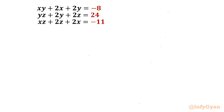Welcome to InfiGyaan friends. In this video we are going to take up one very interesting challenging question from system of equations. Here we are having three equations: xy plus 2x plus 2y equal to negative 8; yz plus 2y plus 2z equal to 24; xz plus 2z plus 2x equal to negative 11. We have to find out xyz. So let's get started.